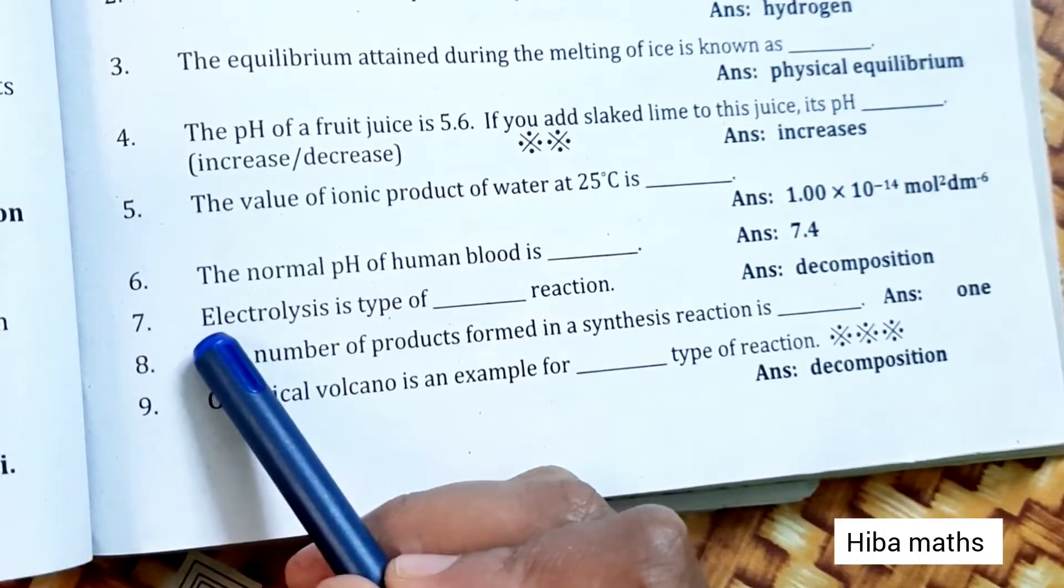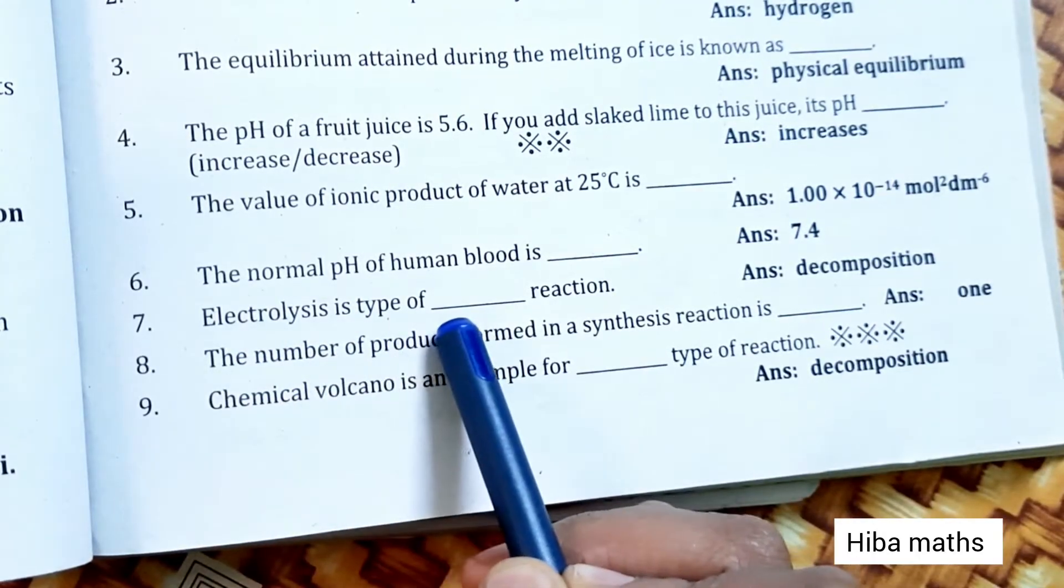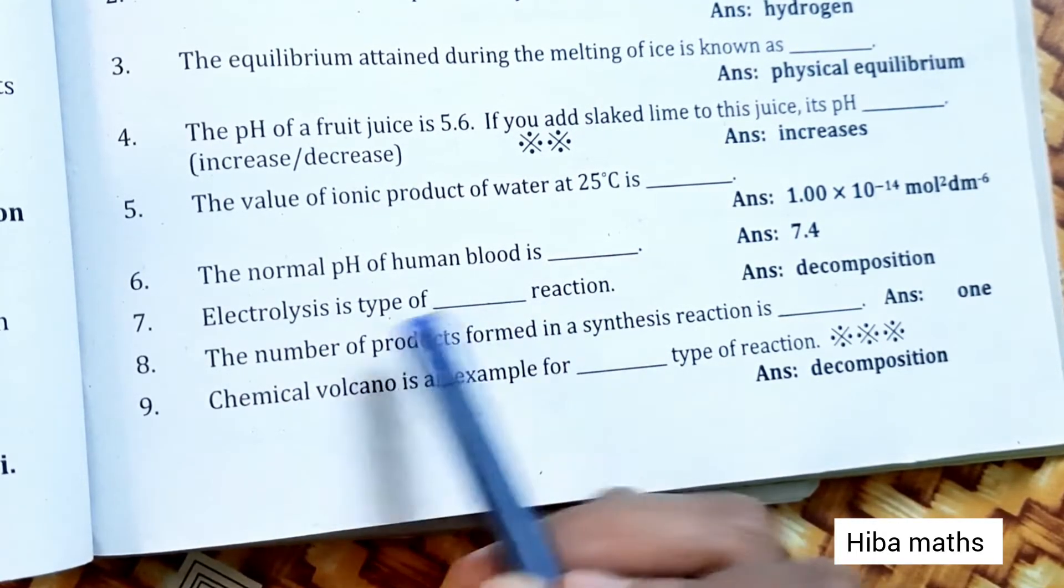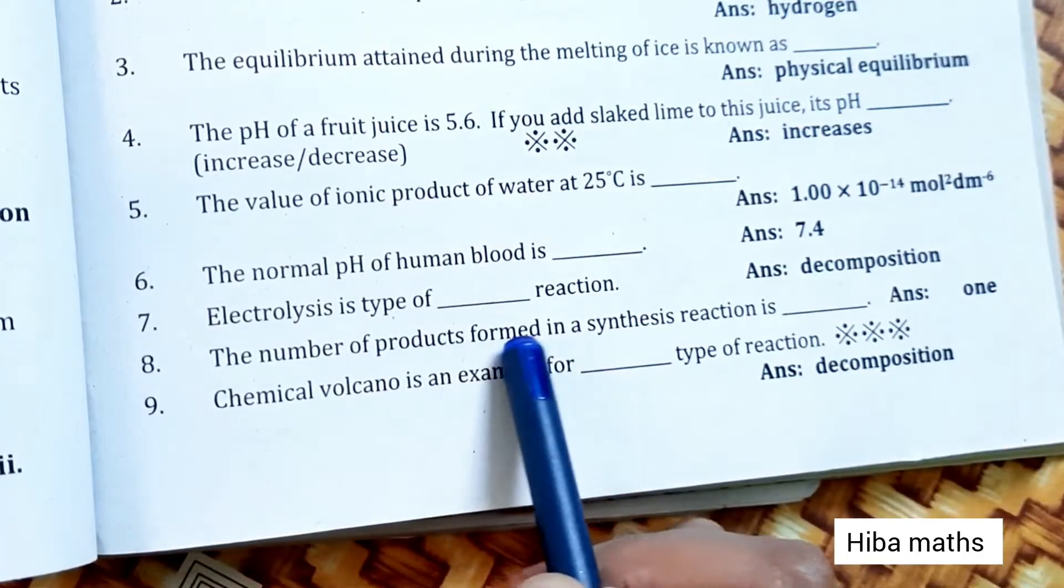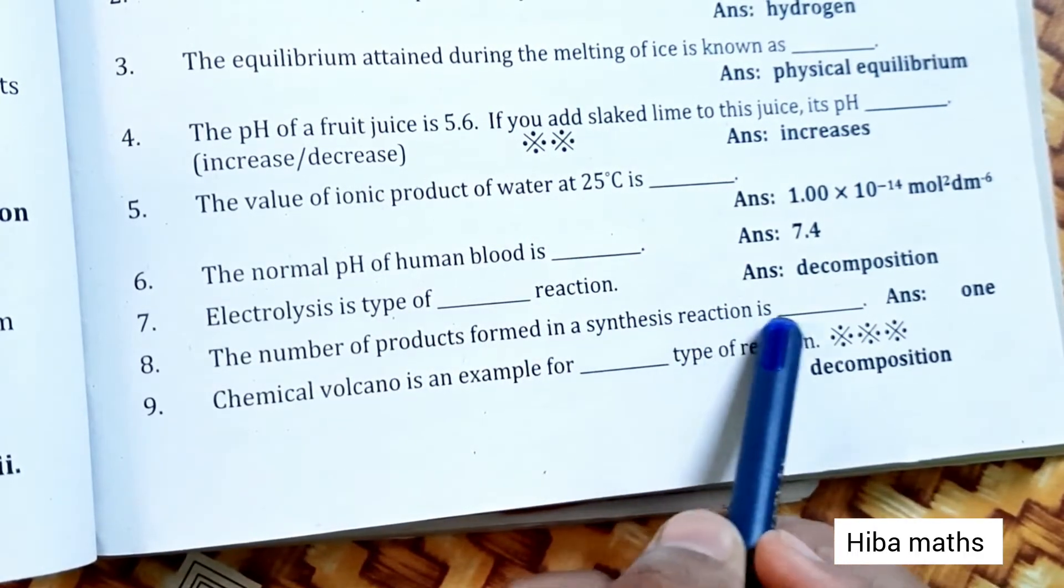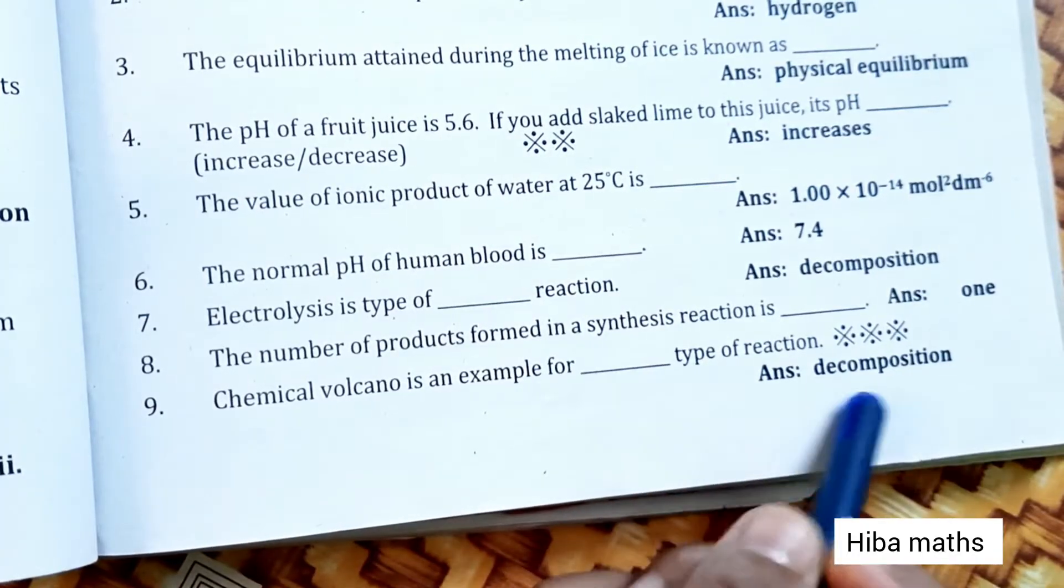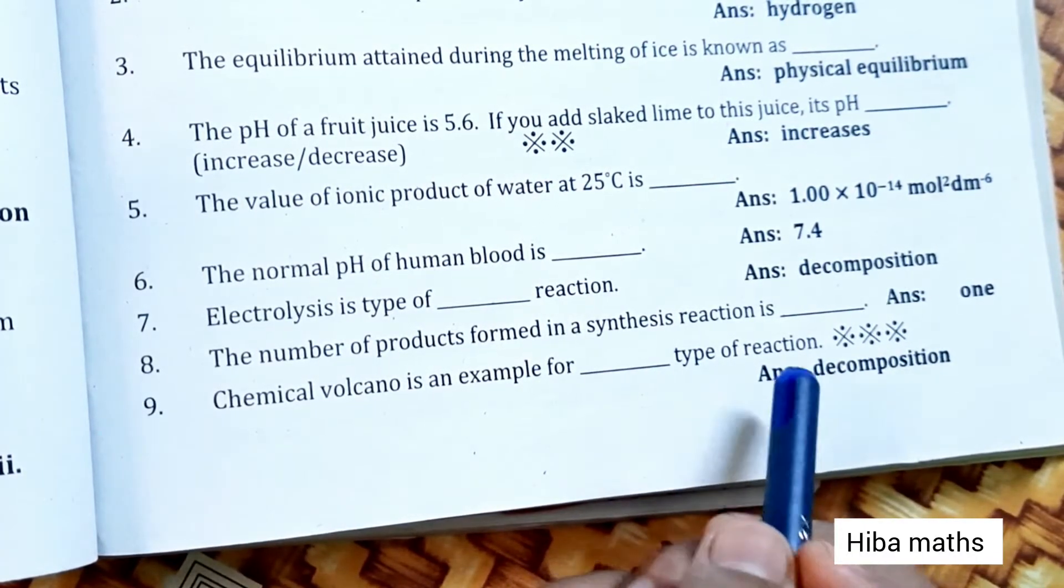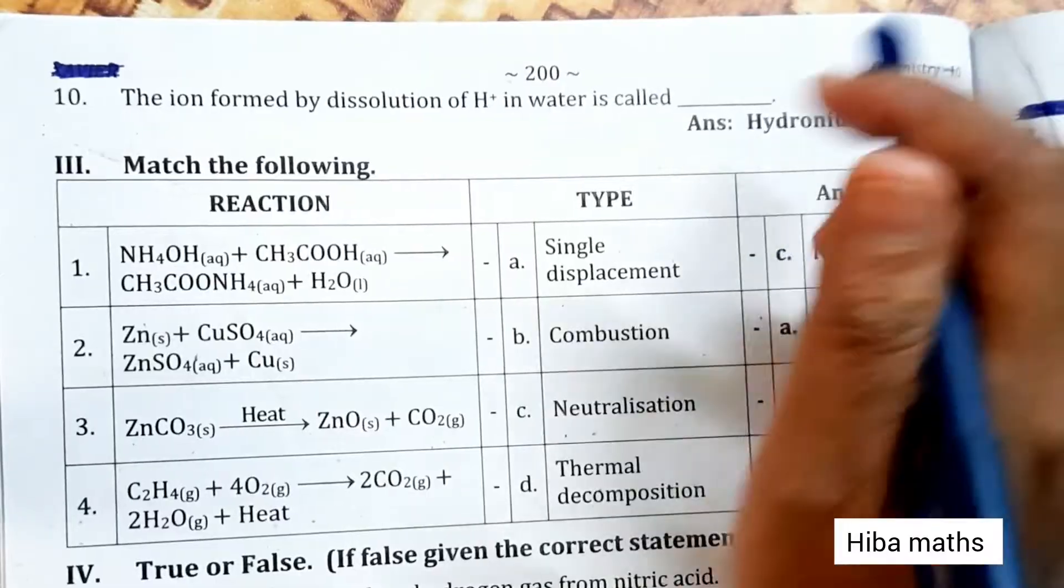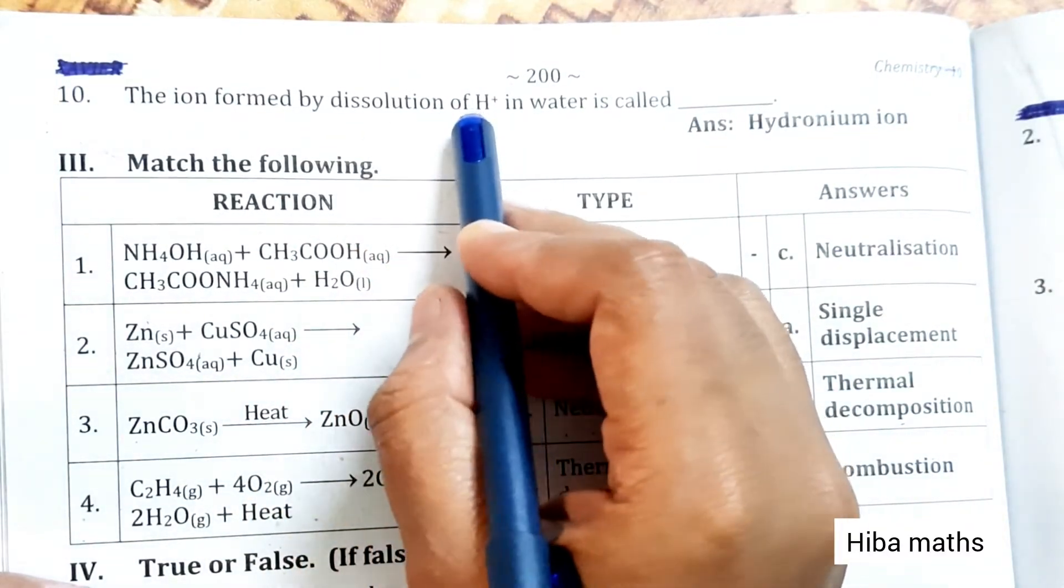The normal pH of human blood is 7.4. Electrolysis is a type of decomposition reaction. The number of products formed in synthesis reaction is 1. Chemical volcano is an example for decomposition type of reaction. The ion formed by dissolution of H plus in water is called hydronium ion.